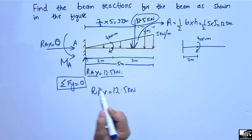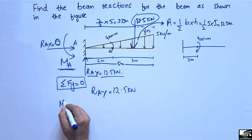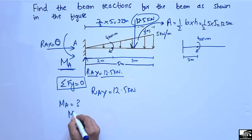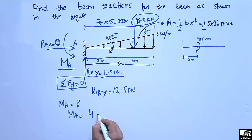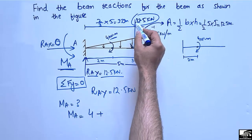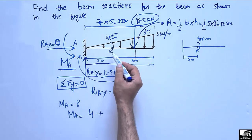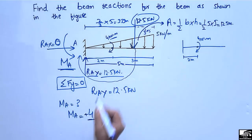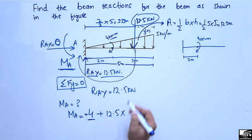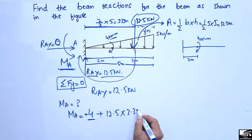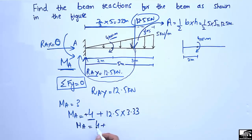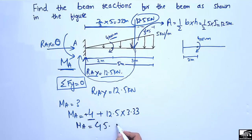To find the moment at point A, we sum all moments acting on the beam. The given moment is 4 kilonewton meter, and we add the moment created by the 12.5 kilonewton load, which acts in the same direction. The moment arm is the distance from the load to point A, which is 3.33 meters. So the moment at A equals 4 plus 12.5 times 3.33, which comes out to be 45.6 kilonewton meter.